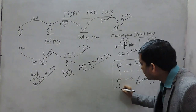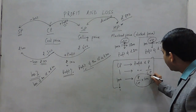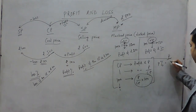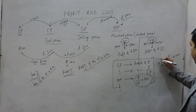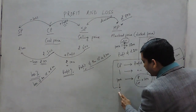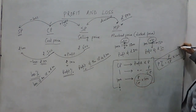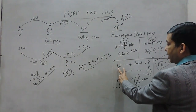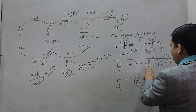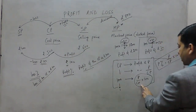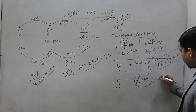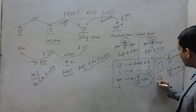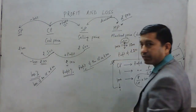When the cost price is Rs.100, whatever the profit is, that is known as profit percent. We can put it as a formula: profit percent equals profit divided by cost price, multiplied by 100 — that is, P upon CP into 100. The same applies to loss percent: if the cost price is CP and the loss is L, then when the cost price is Rs.100 the loss percent equals L upon CP into 100. So loss percent equals loss divided by cost price into 100. These are the two formulas generated from this logic.